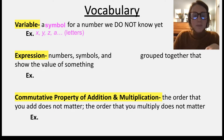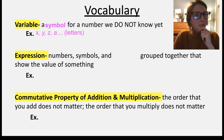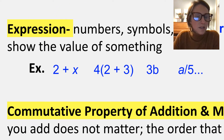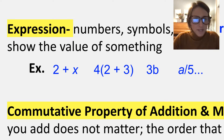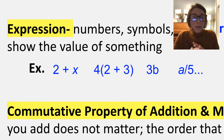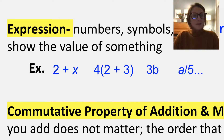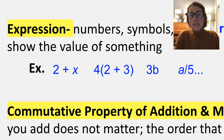An expression: numbers, symbols, and operators grouped together that show the value of something. Here are some examples of expressions. Two plus X — that's an algebraic expression because we have an unknown value. Four times the group two plus three — that's a numerical expression because we know every number. Three B means three times B. A divided by five — these are examples of expressions.